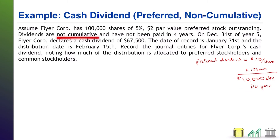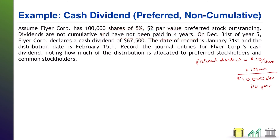It tells us these dividends are not cumulative and have not been paid in four years. Because these are non-cumulative, that four-year gap doesn't matter. If this were cumulative, the company would actually owe those four years of dividends to the shareholders. But since it's non-cumulative, the fact that the company hasn't paid for four years is irrelevant. The preferred stockholders will get this year's dividend — they are not going to get dividends for the four missed years.